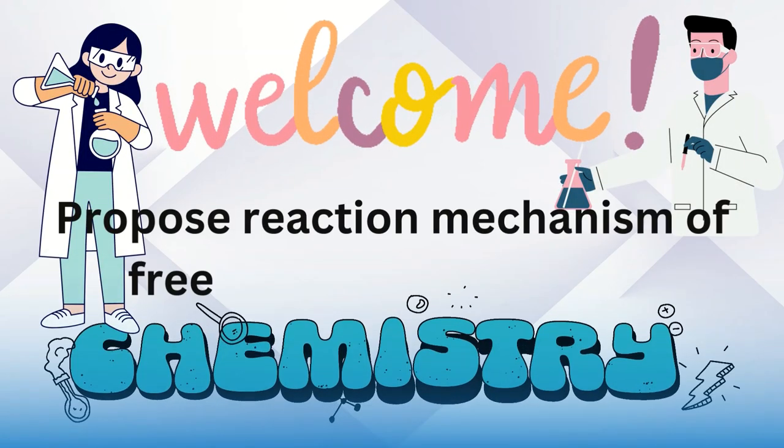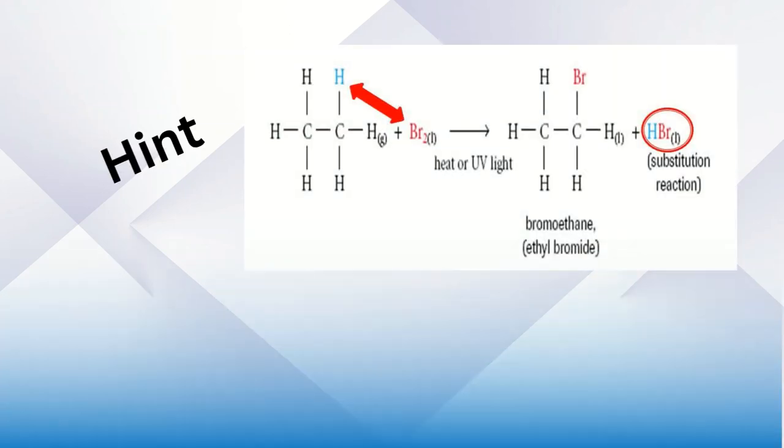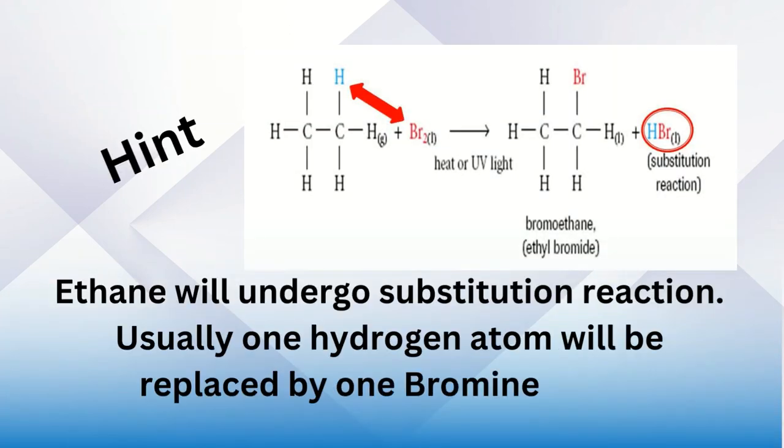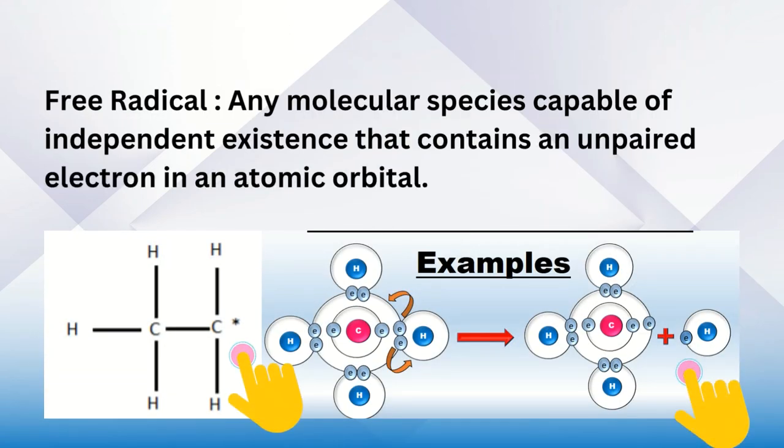Question: Propose a reaction mechanism of free radical with ethane. As we know, ethane will undergo substitution reaction. Usually one hydrogen atom will be replaced by one bromine atom. A free radical is any molecular species capable of